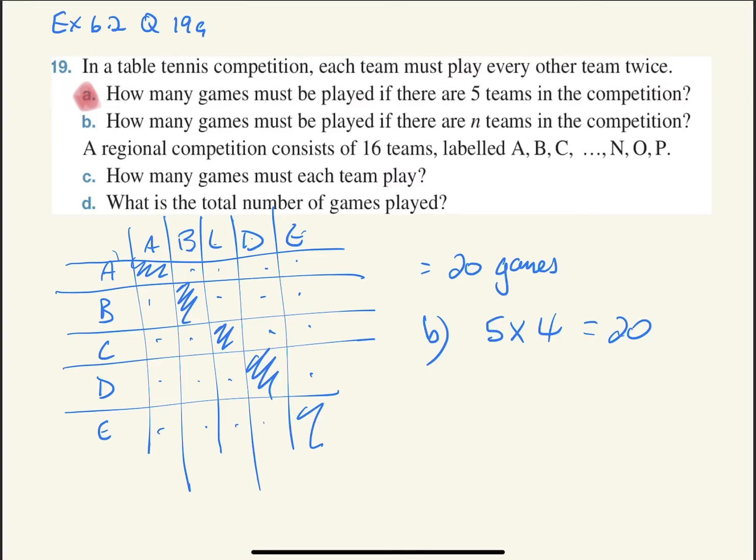If this was only one round, it's usually N times N minus 1. If this was only one round, we always divide this by 2. But we will get later, in other examples, we will get back to this type of question.